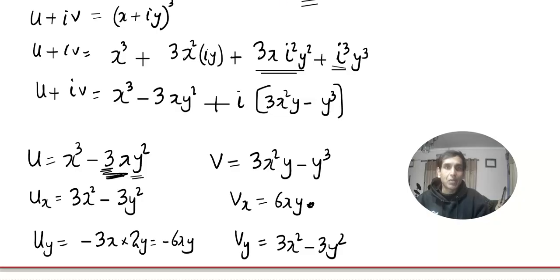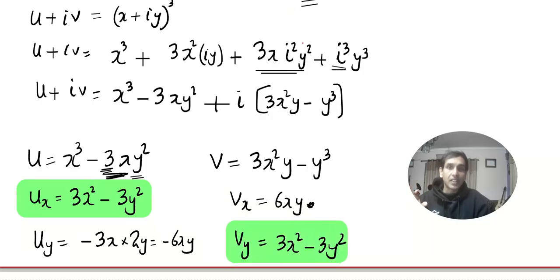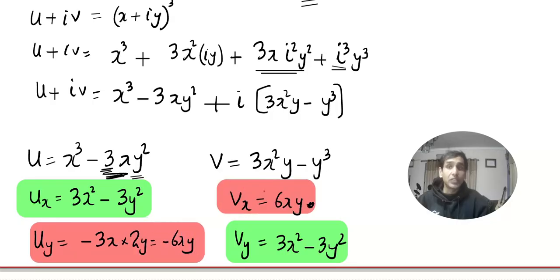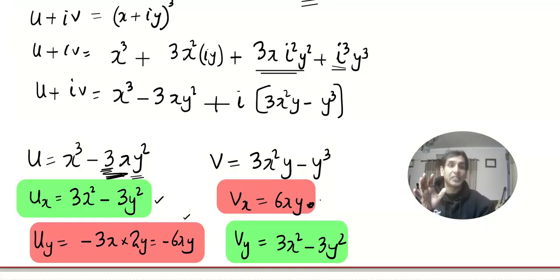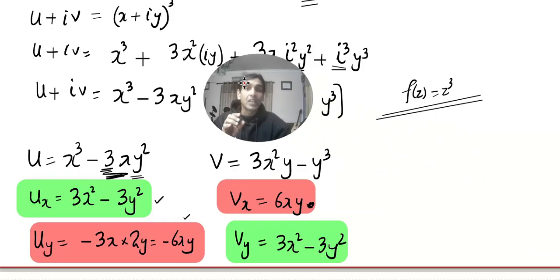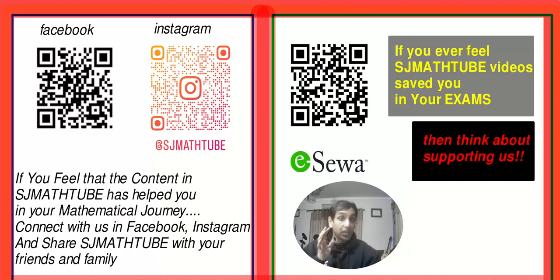We verify the CR equations: u_x = v_y (both equal 3x² − 3y²) and u_y = −v_x (both equal −6xy). By verifying the CR equations alone you cannot claim the function is analytic — you must also ensure all partial derivatives are continuous. Since these are polynomial functions, they are continuous, so f(z) = z³ is analytic.